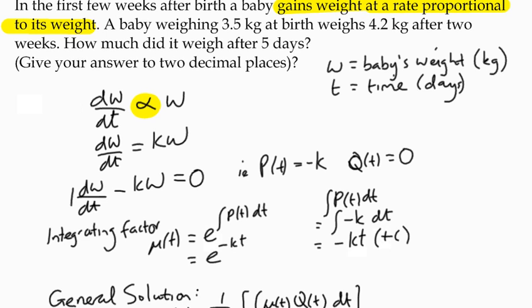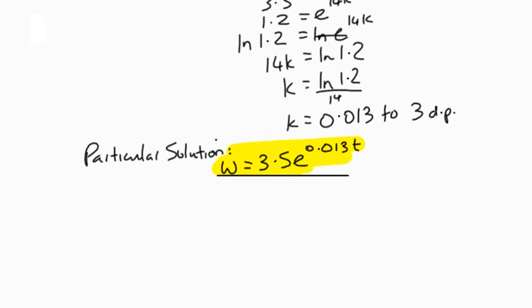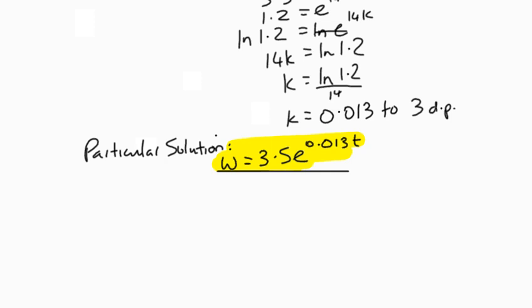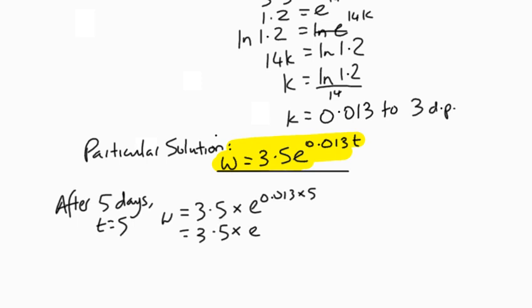The question didn't actually ask us to find a particular solution. If you remember way back, it asked us to say how much did it weigh after five days. Now that's easy enough because we can just use this equation. After five days, t equals five, so w equals 3.5 multiplied by e to the power 0.013 multiplied by 5.